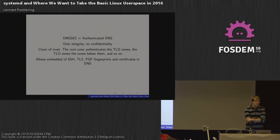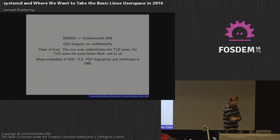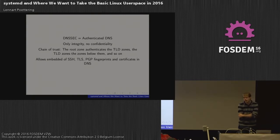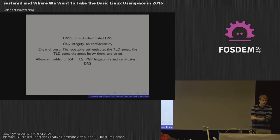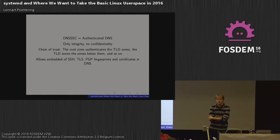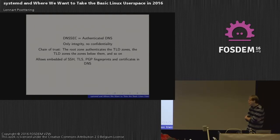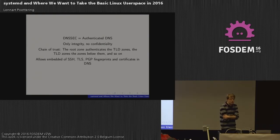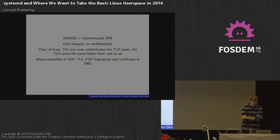The root zone contains the cryptographic keys that authenticate the TLD zones - top-level domains like .com, .net, .de. The TLDs contain keys which sign the domains under them. So if you go to fosdem.org, fosdem.org is protected by the keys stored in the org zone, and those keys are protected by ones in the root zone - it goes recursively down. One of the use cases of DNSSEC is not just host address resolution, but also carrying additional information in the DNS - SSH, TLS, and PGP fingerprints and other cryptographic data. The idea is that when you access your bank, DNSSEC will not only give you the IP address but also tell you the TLS certificate fingerprint to use, so you don't need to authenticate the TLS certificate through any other means.